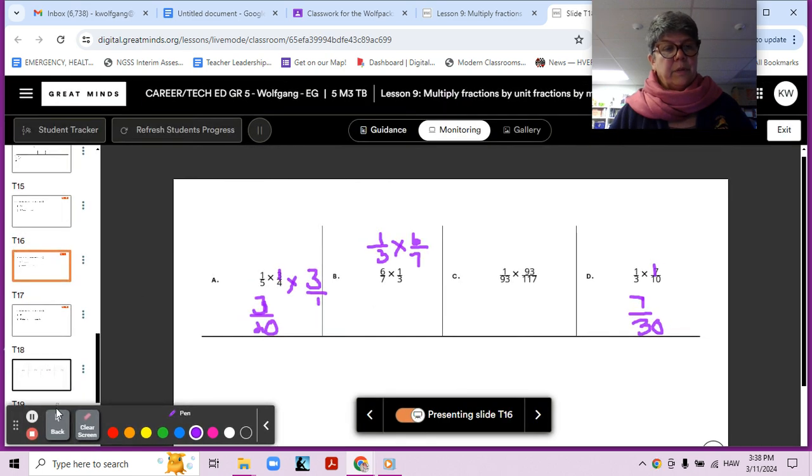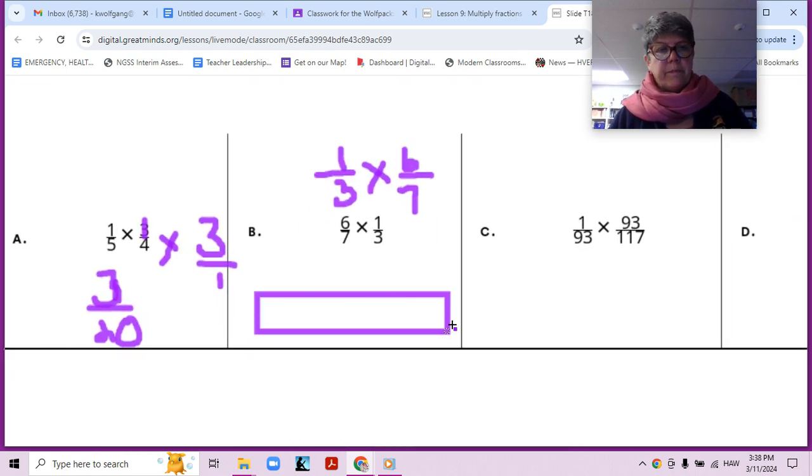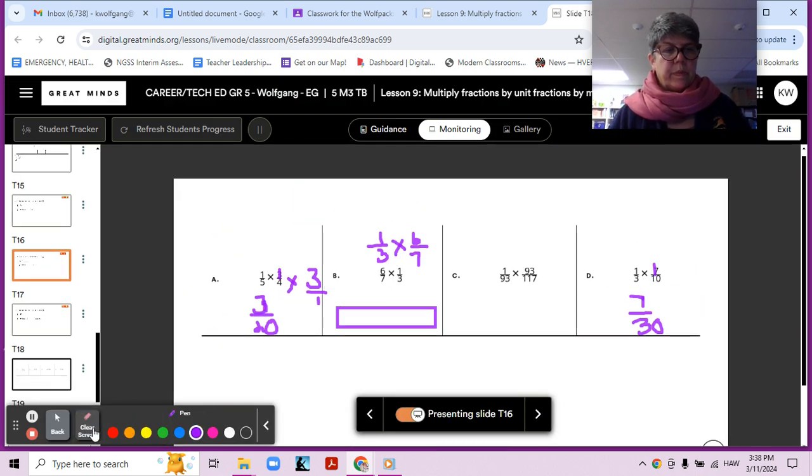Remember? So let's draw a tape diagram of six sevenths. Okay, so one, two, three, four, five. Six lines make seven parts, but I'm only interested in six of them. And then one third, because three times two is six, I know that two pieces are going to make one third, right?